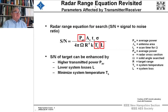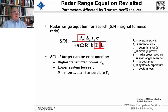Going back to the radar equation, here are the parameters affected by the transmitter and receiver. The signal-to-noise ratio depends linearly on the average power — this is the search form of the radar equation — along with the aperture and the scan time within the solid angle you're looking at, and the cross section.